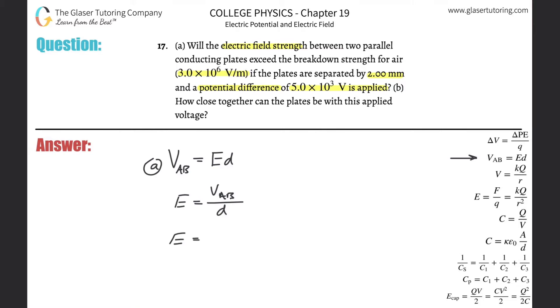This is for letter A, and they said that it was 5 times 10 to the 3rd volts. It was separated by 2 millimeters, but you know by now we need that in meters. So simply just divide that by 1,000, and let's calculate.